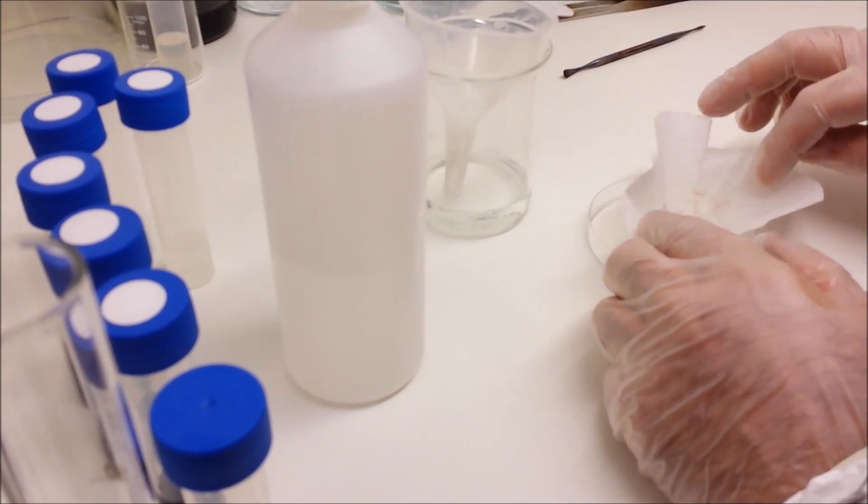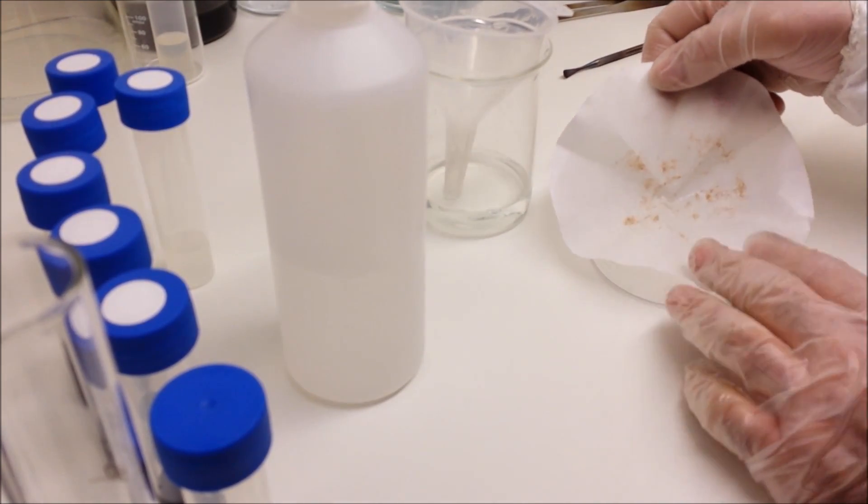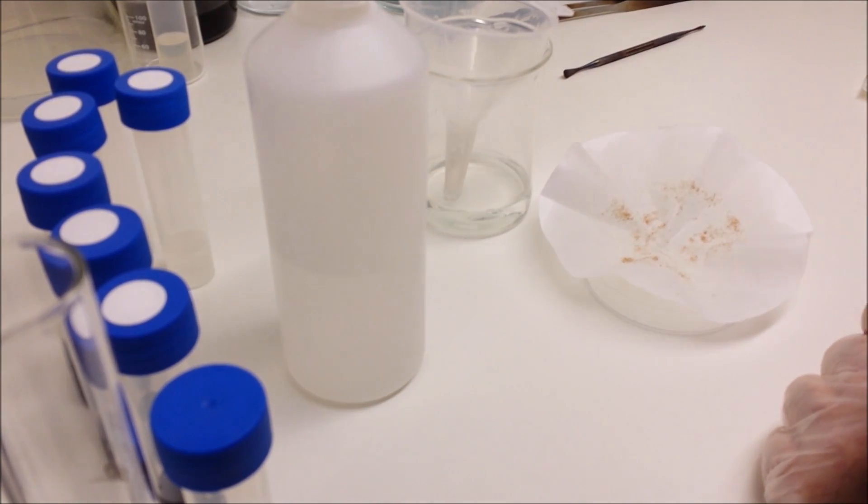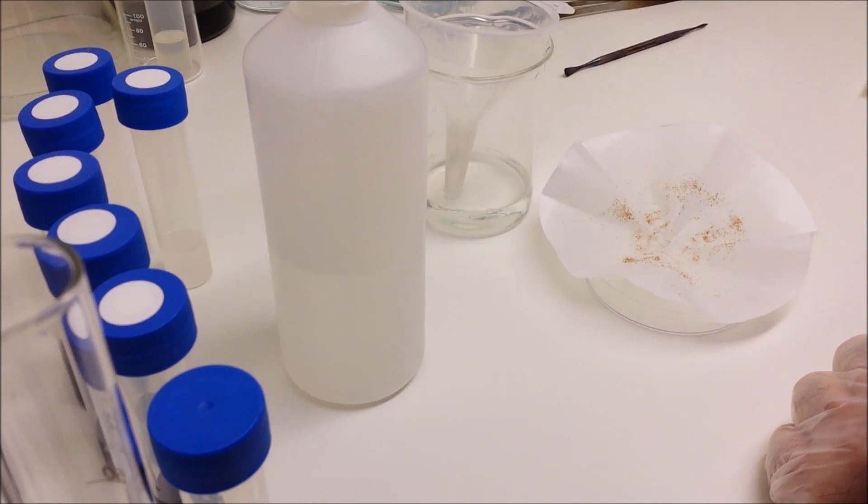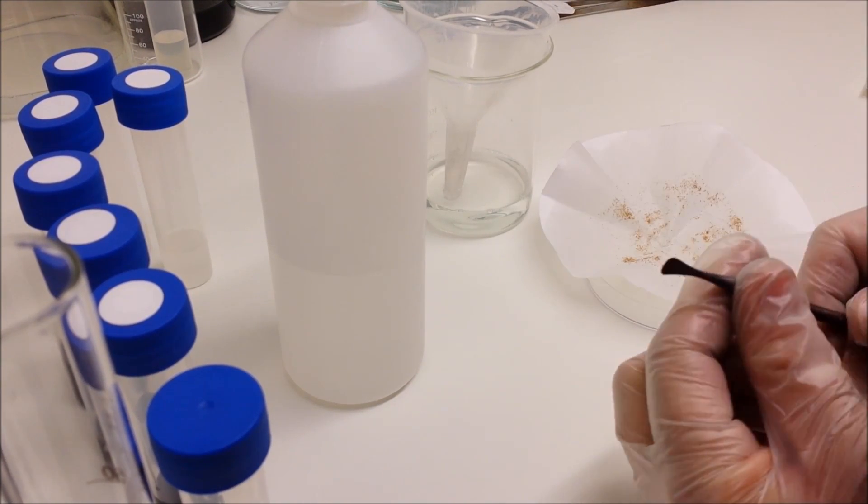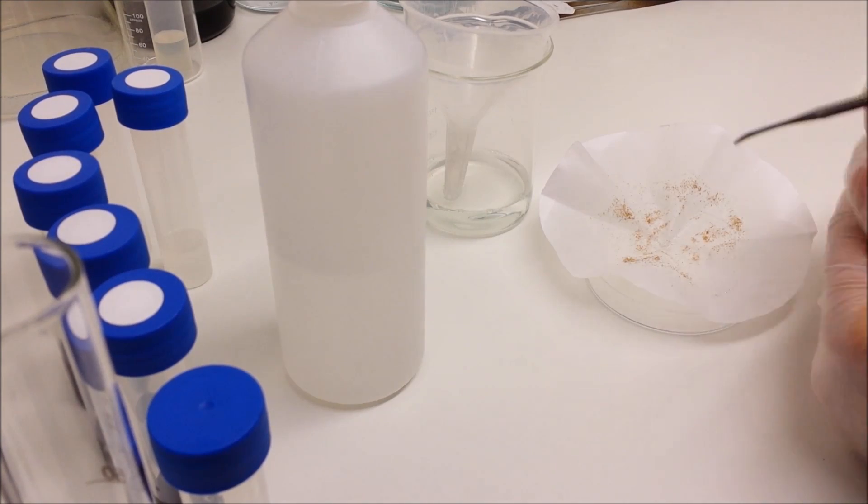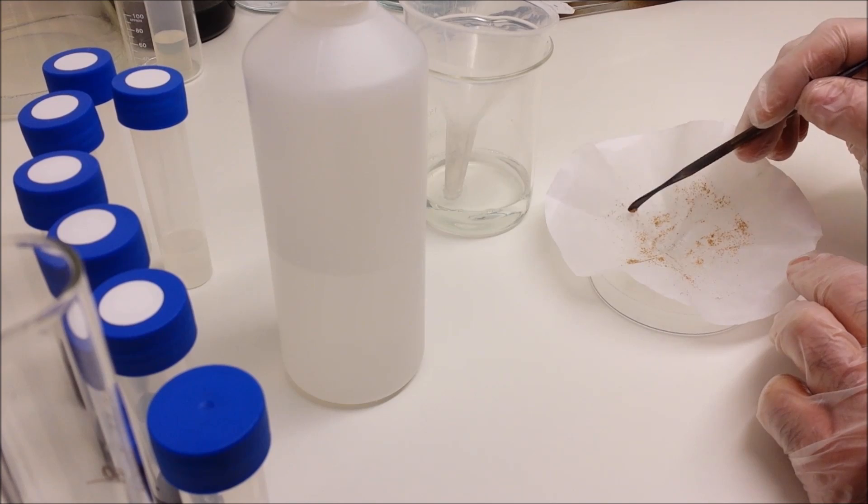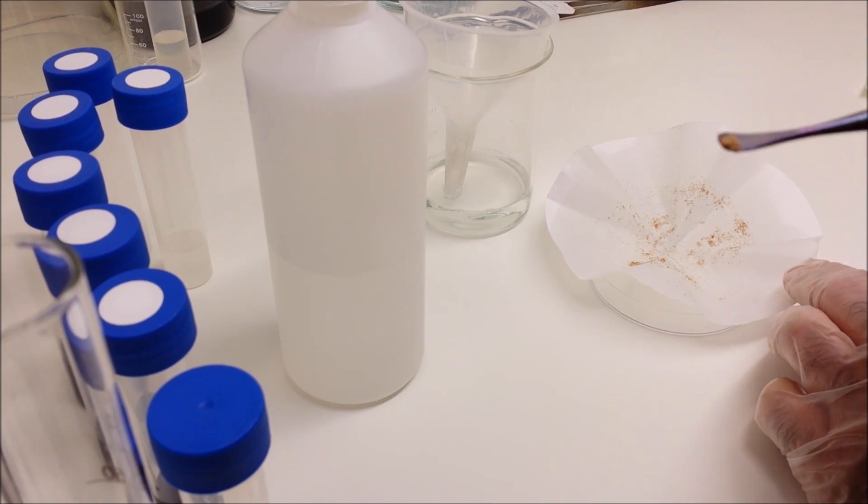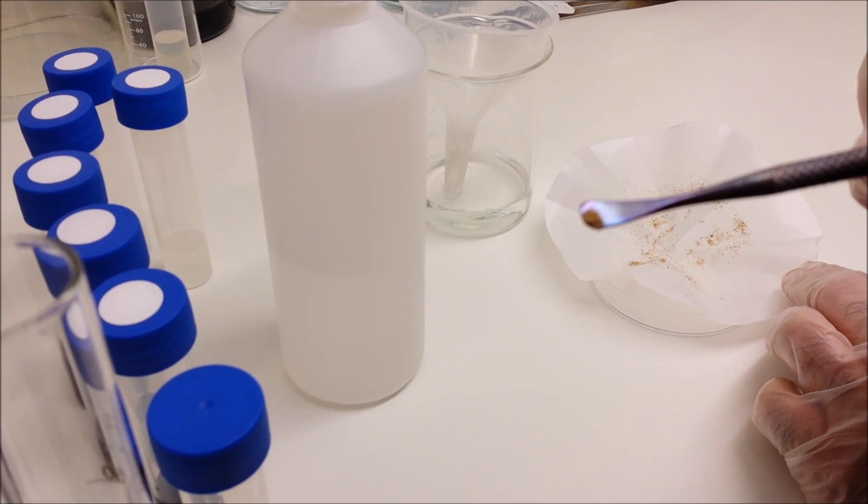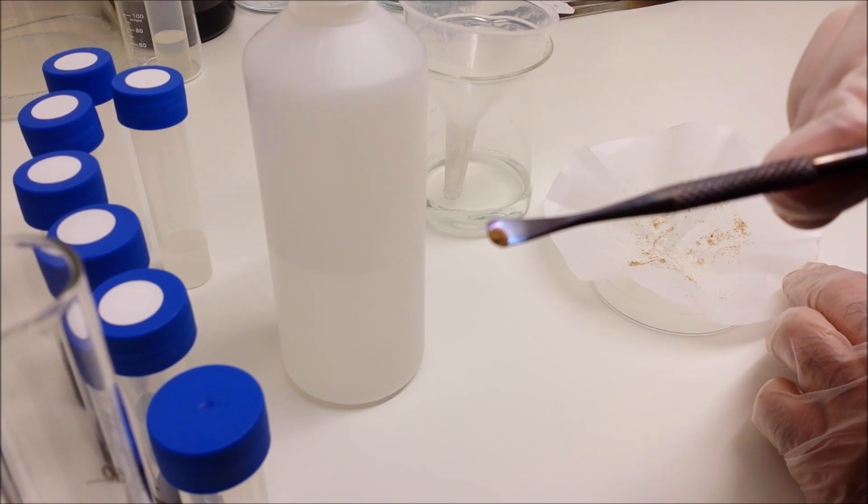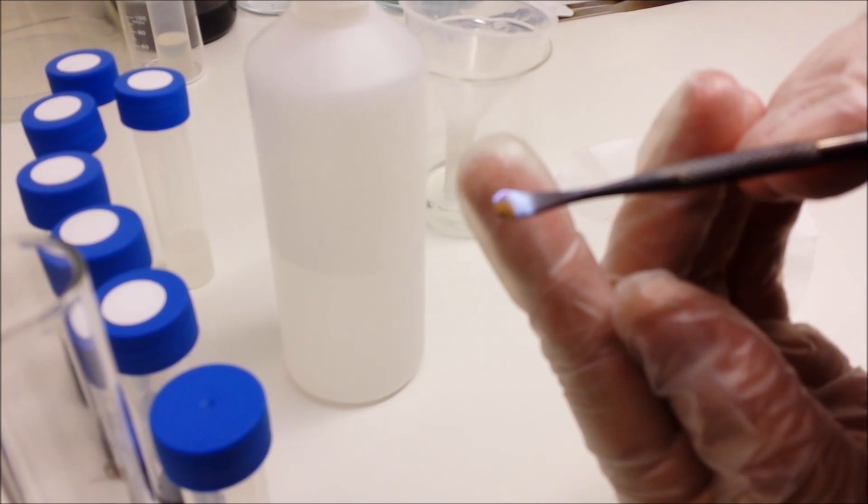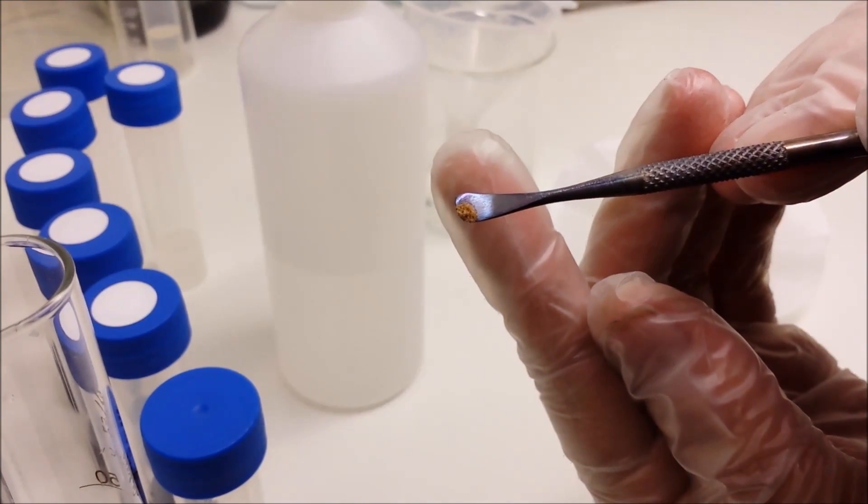As you can see, the seeds are now sterile and on the paper in clumps. We're ready to begin flasking those up. I'm using the round end of the spatula just to scrape small piles of seeds together. In that little bit on the tip of this spatula there will be thousands of seeds.